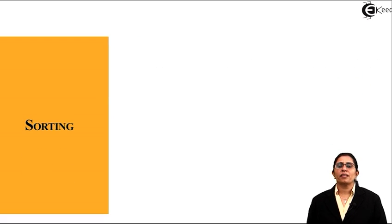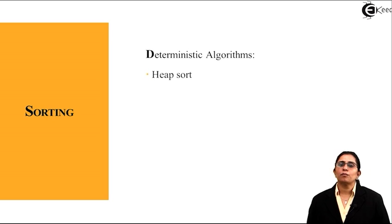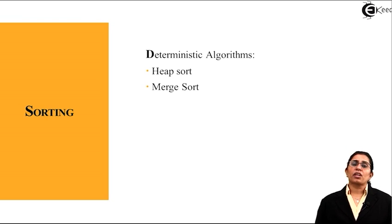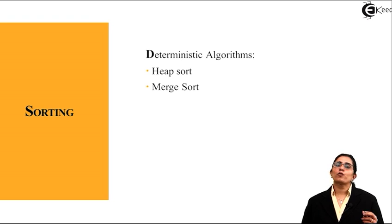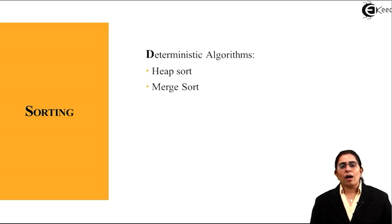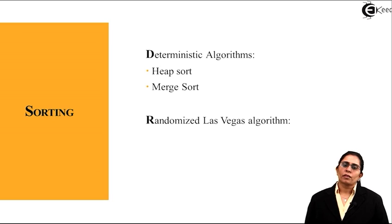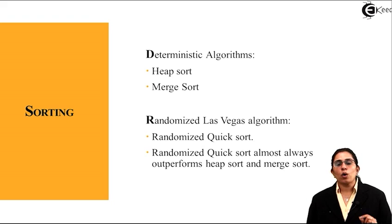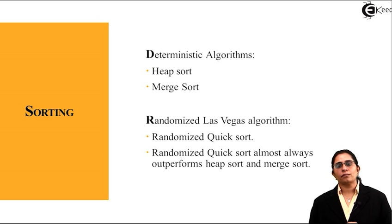Now let's take an example for sorting. Deterministic algorithms for sorting are heap sort and merge sort. In heap sort where I have a list of numbers I create a heap of sorting, and in merge sort I use divide and conquer. When I apply a randomized Las Vegas algorithm, the sort implemented is quicksort. Randomized quicksort almost always outperforms heap sort and merge sort.